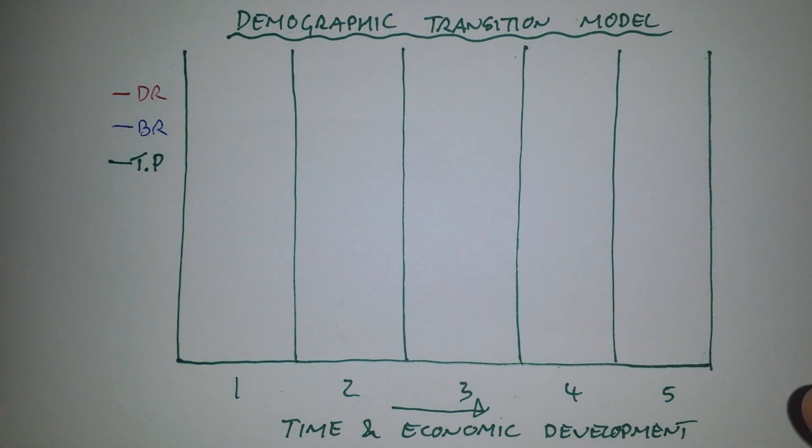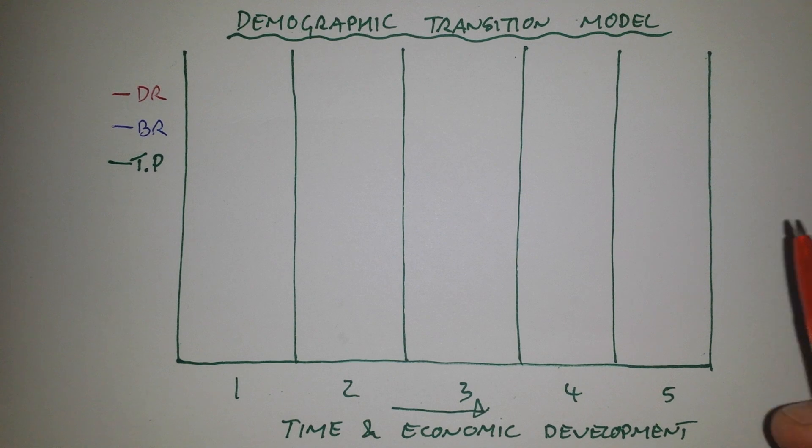So the demographic transition model is a really classic piece of population geography that tries to explain how a country's population changes over time as a result of economic development.